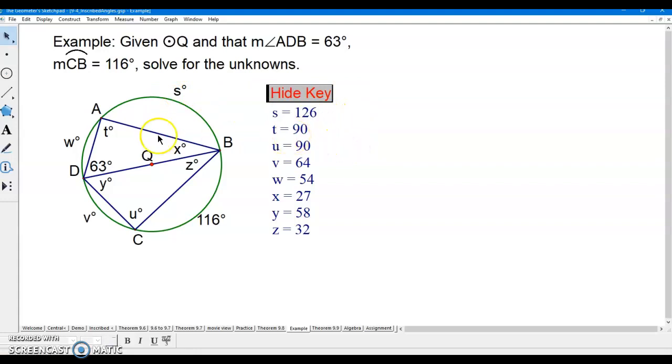T, since Q is the center, we know that DB, segment DB is diameter. So we got a semi-circle right here. So T has to be 90 degrees. Same reasoning, U has to be 90 degrees. V is 64 degrees because we have a 180 degree arc here. A semi-circle, 180 minus 116 is 64. So then same here. This is a semi-circle leaving 54 for W. Then X is an inscribed angle that has to be half of W, so 27.